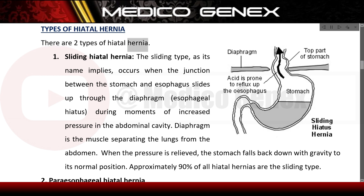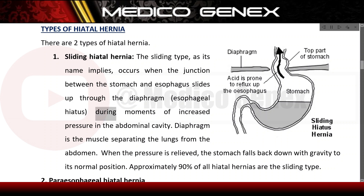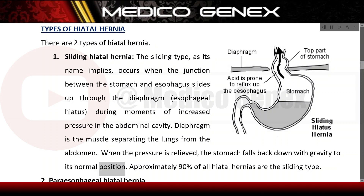Types of hiatal hernia. There are two types. The sliding hiatal hernia occurs when the junction between the stomach and esophagus slides up through the diaphragmatic esophageal hiatus during moments of increased pressure in the abdominal cavity. The diaphragm is the muscle separating the lungs from the abdomen. When pressure is relieved, the stomach falls back down to its normal position. Approximately 90% of all hiatal hernias are the sliding type.